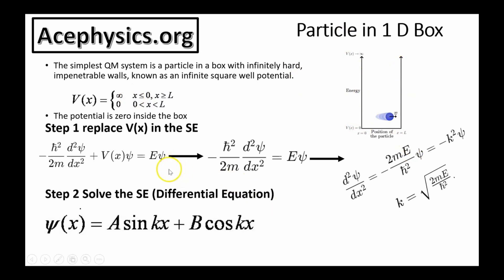The procedure to solve any problem involving the Schrödinger equation is the same. After you define the system, the next step is you write down the Schrödinger equation. This is the Schrödinger equation. It's a differential equation. H is Planck's constant. M is the mass of the particle that you're analyzing. V is the potential of the potential energy of the particle.